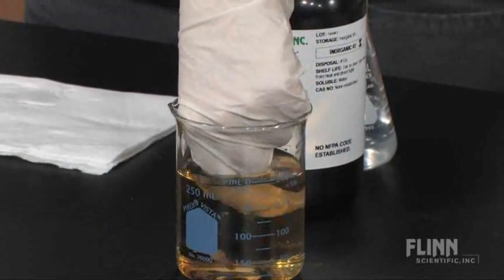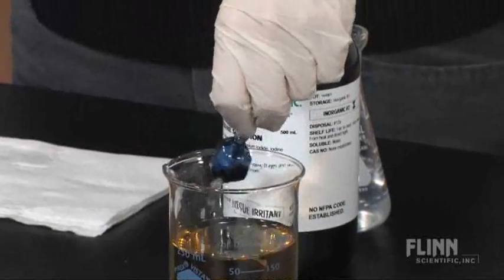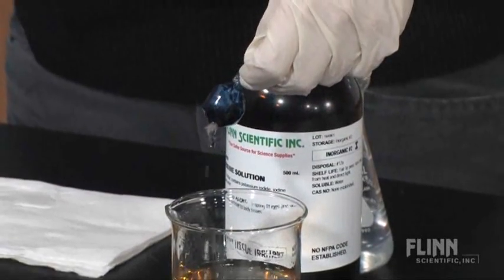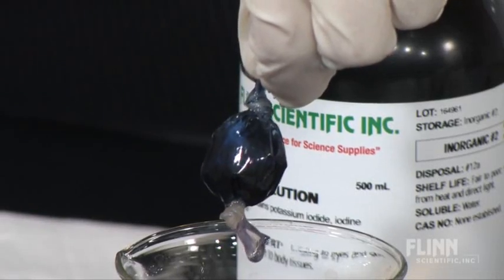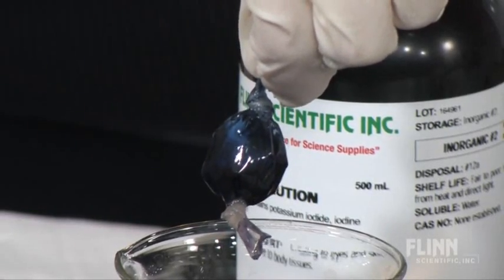However, the solution in the model cell is now a bluish black. Since it initially contained a starch solution, the presence of color tells us that iodine was able to diffuse inside of the cell.